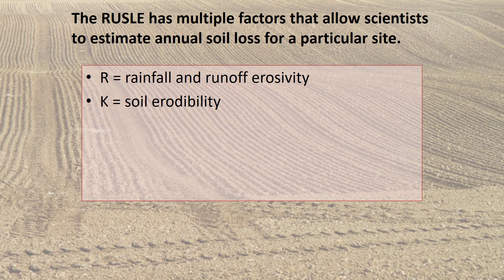Increase in permeability decreases runoff because infiltration is higher. L is the slope length factor, which represents the effect of slope length on erosion. Slope length is the distance that water travels downhill from the top of the hill to where deposition starts or flow becomes channelized. S represents the effect of steepness of the slope on erosion. Steeper slopes have a stronger downward component of gravity than do shallower slopes, causing water to accelerate faster and have more erosive power.